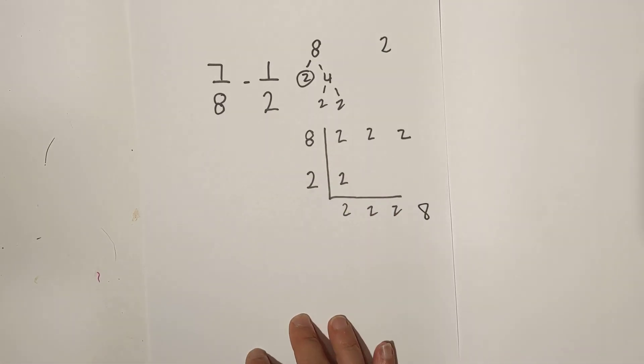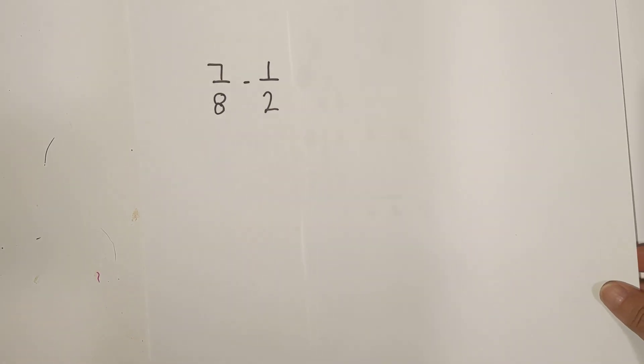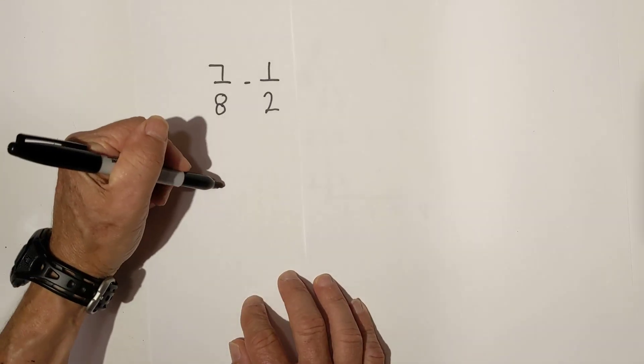Now you do not have to use this technique, but you do need to find a common denominator. So now, let's use 8 as our common denominator, and we're going to rewrite the fractions.